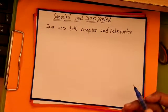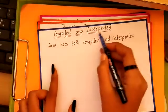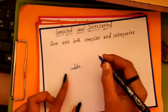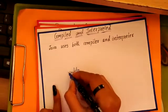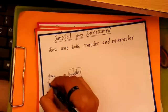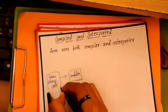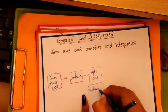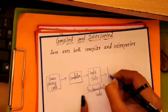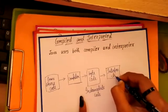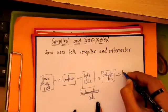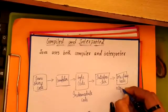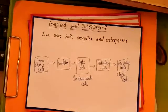Now let's see the features of Java one by one in detail. The first one is compiled and interpreted. Java uses both the compiler and the interpreter. Usually, a compiler converts the code into machine code. Here, the Java compiler converts the Java source code into byte code, which is also called intermediate code. Then there is an interpreter that converts the byte code into machine code, which is also called the object code. Therefore, Java is called compiled and interpreted.